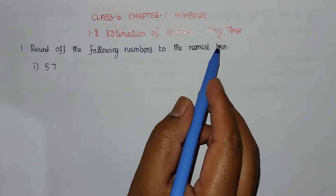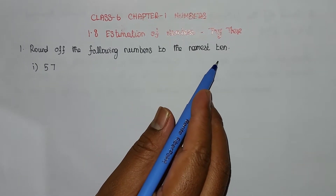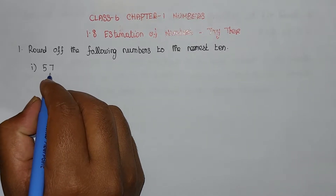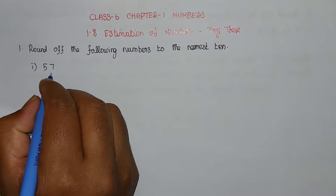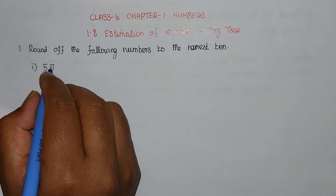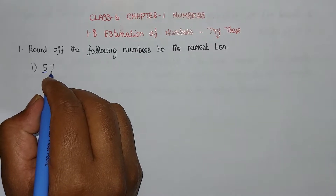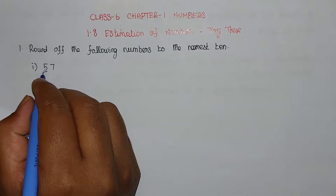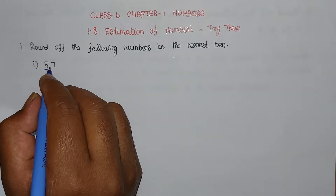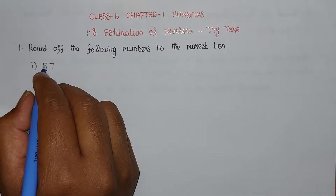Now we are going to see the Try This section. Problem 1: Round off the following numbers to the nearest 10. First, find the 10s place. The ones digit is to the right of the 10s place. If the ones digit is 5 or greater than 5, add plus 1 to the 10s place value.